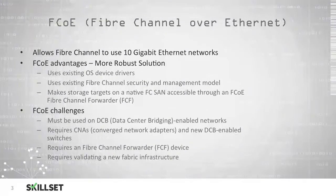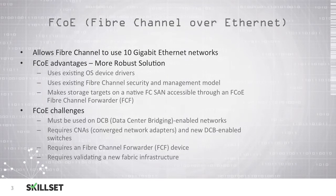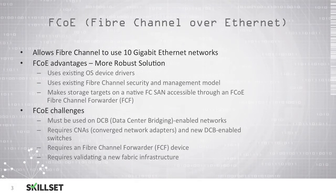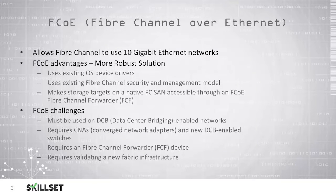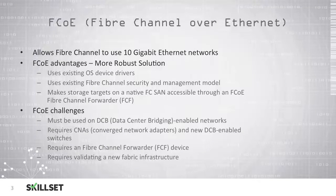There are some challenges with Fiber Channel over Ethernet, however. You must be on a DCB, or data center bridging, enabled network, and it requires converged network adapters, or CNAs, and DCB enabled switches. You will also need a Fiber Channel forwarder device, or FCF, and it will require you to validate your new infrastructure.